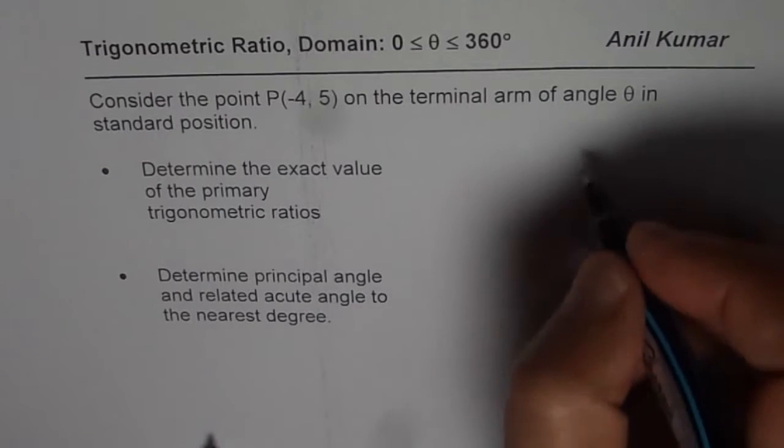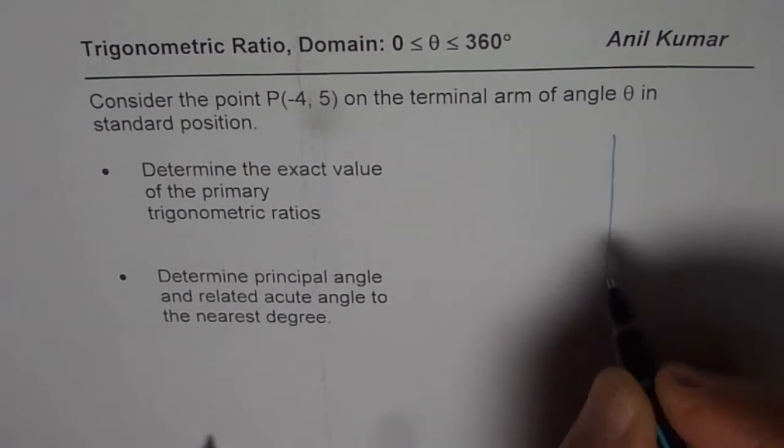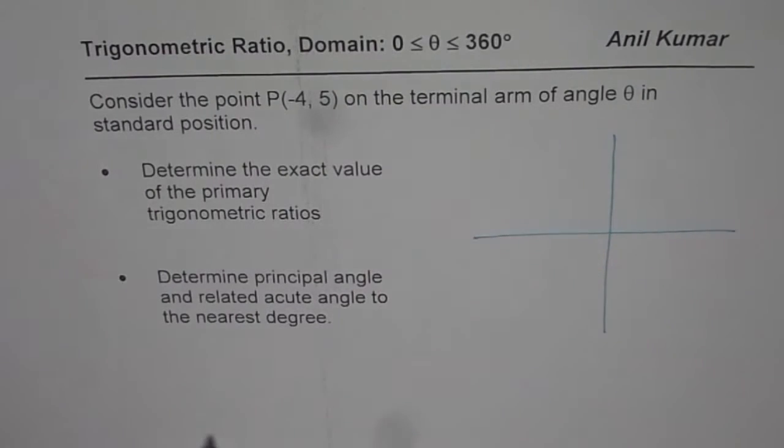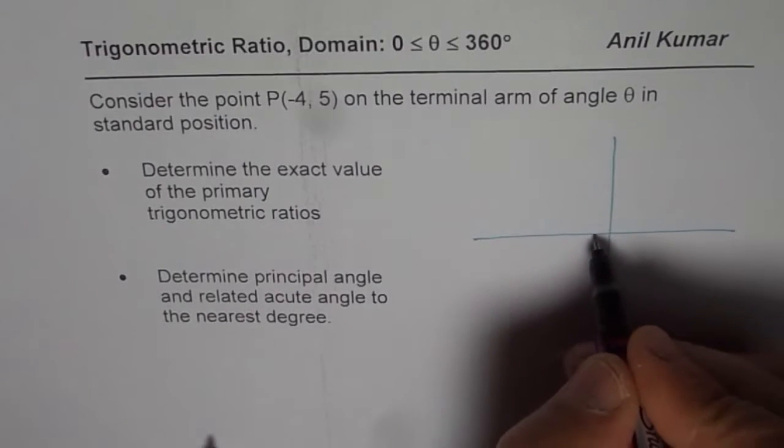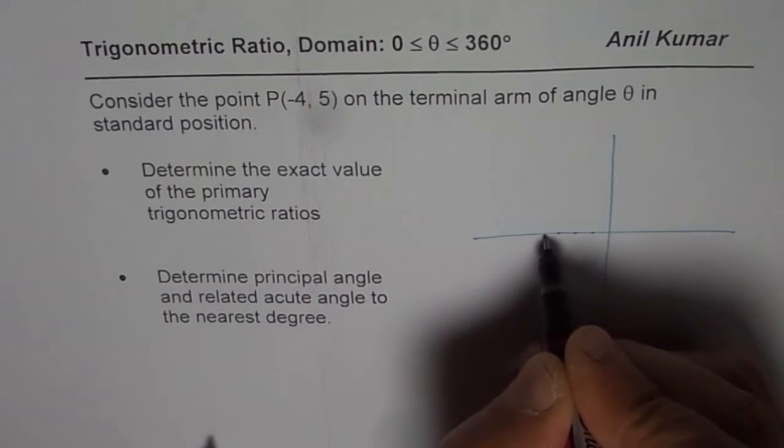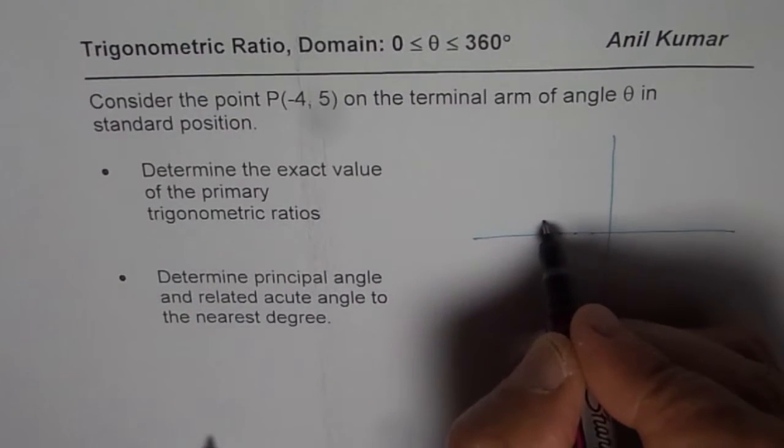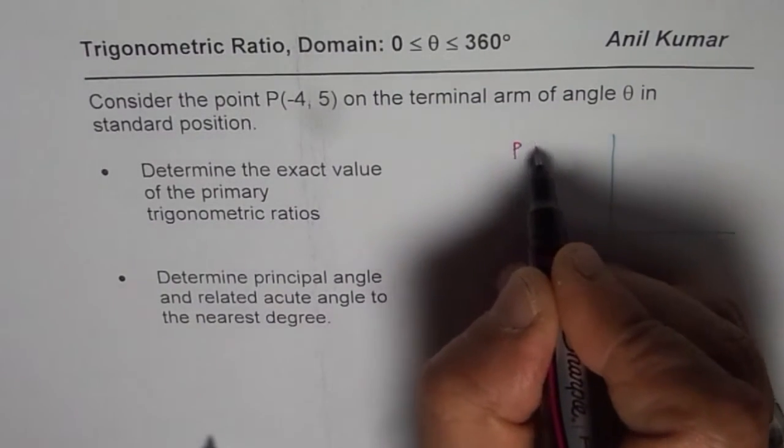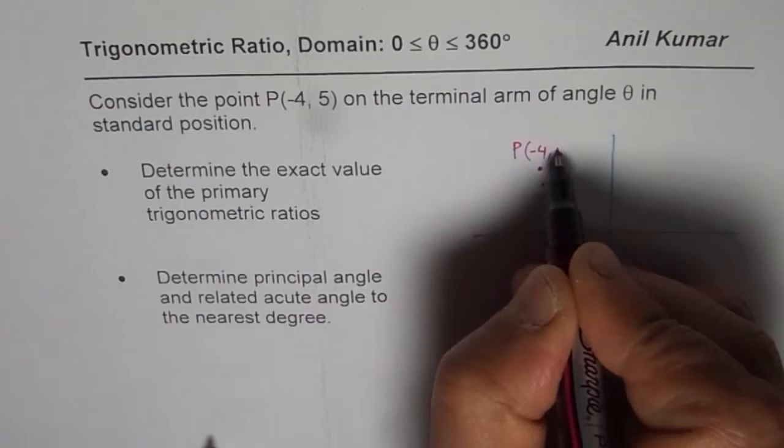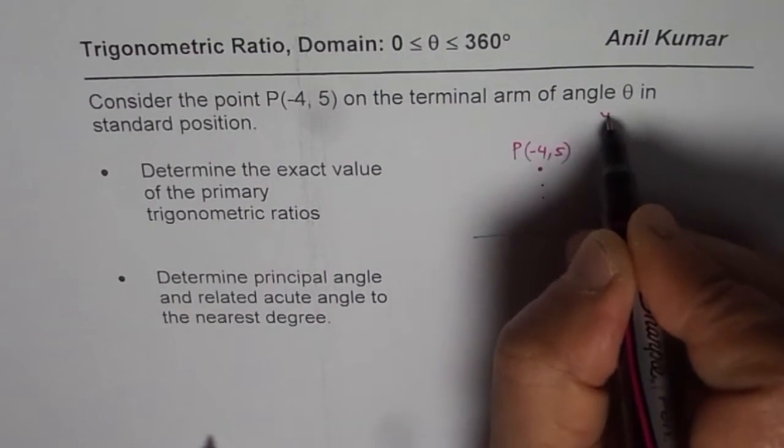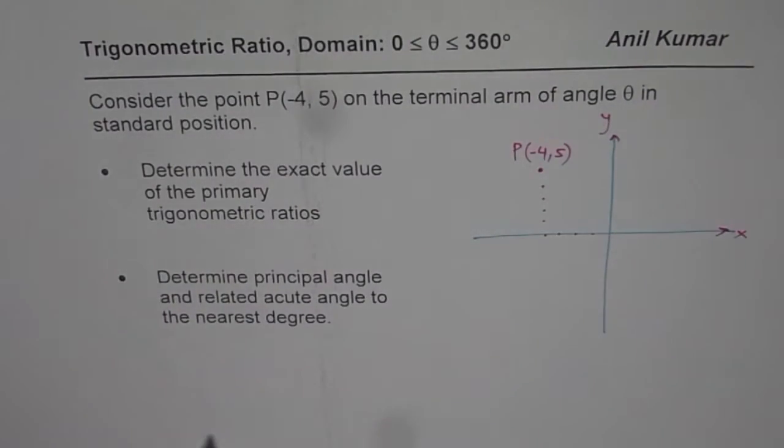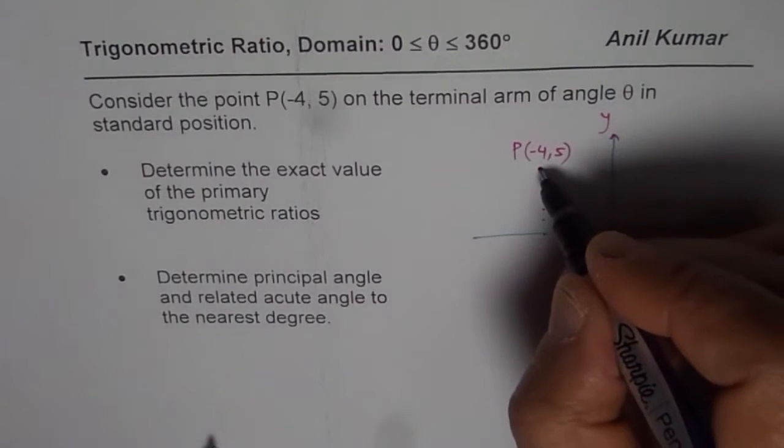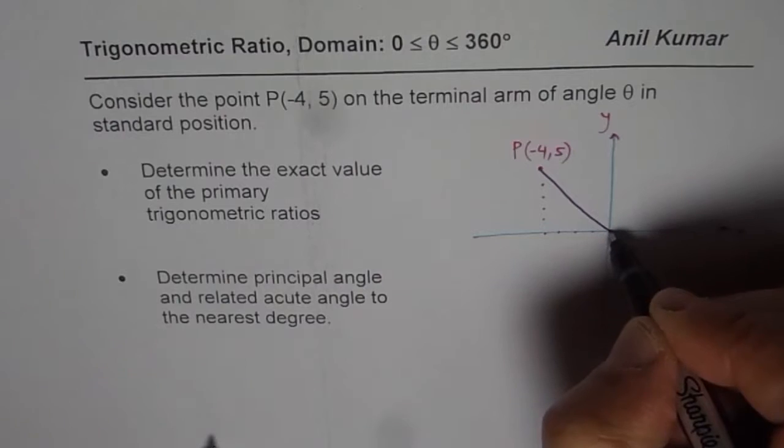Let us first figure out where does that point belong. This point is (-4, 5). That means 1, 2, 3, 4, minus 4 and 5: 1, 2, 3, 4, 5. Let us say that is the point P, which is (-4, 5). We are saying that is y-axis and this is x-axis. When this point is here, which is in quadrant 2, we need to find exact values of the primary trigonometric ratios.